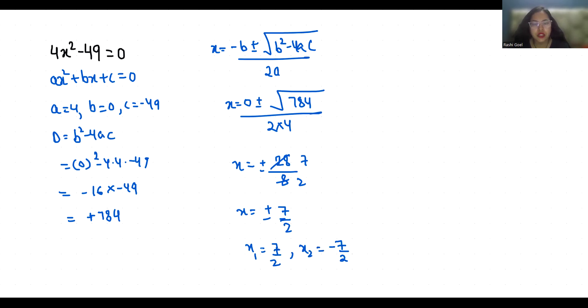First method is this, and second method you can solve 4x square minus 49 equals 0. So 4x square equals 49 and x square equals 49 by 4. x square equals 49 is 7 square and 4 is 2 square, so x square equals 7 by 2 whole square.